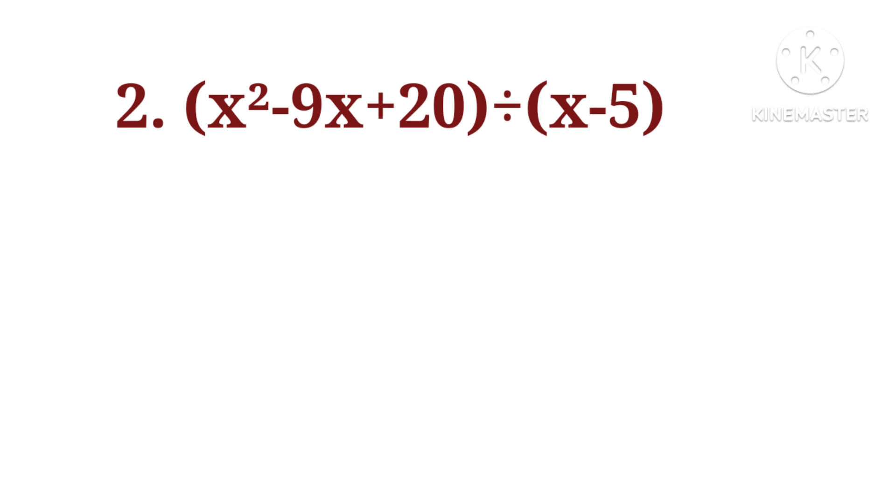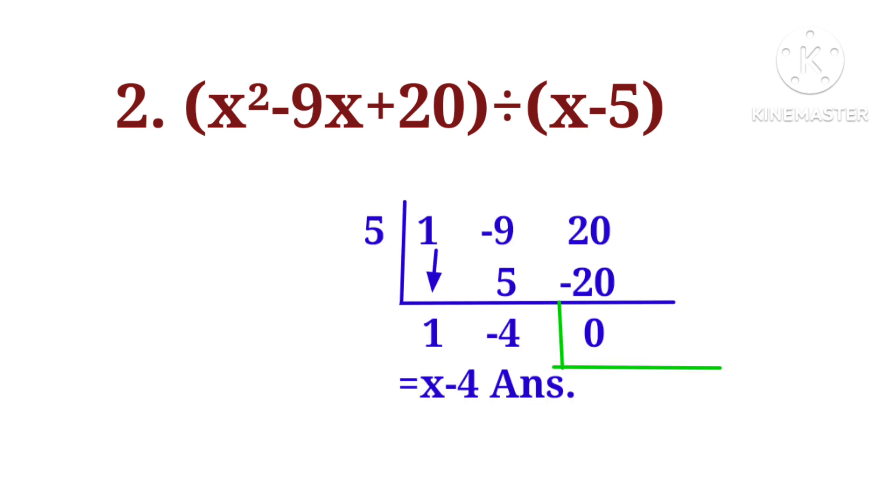Question number 2: x square minus 9x plus 20 divided by x minus 5. x minus 5 is equal to 0, so x is equal to 5. Coefficient of x square is equal to 1, coefficient of x is equal to minus 9, and constant term is 20.